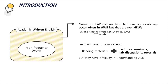EAP teachers and course designers usually make rash judgments that students already have sufficient word knowledge before entering EAP programs. This assumption leads many EAP courses to mainly focus on academic written English vocabularies that are not high frequency words. For example, the Academic Word List by Coxhead is widely used for EAP programs, but it doesn't include high frequency words.